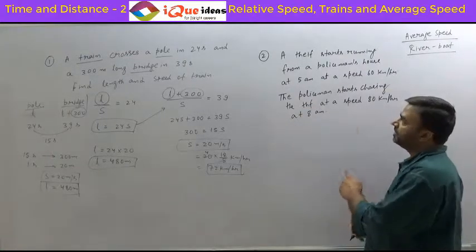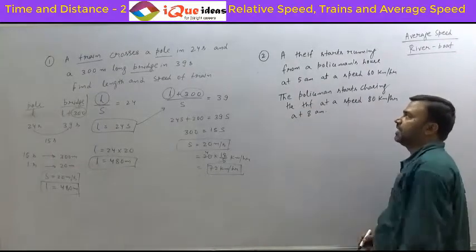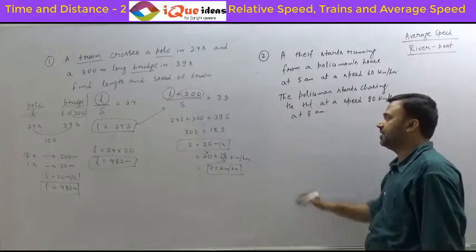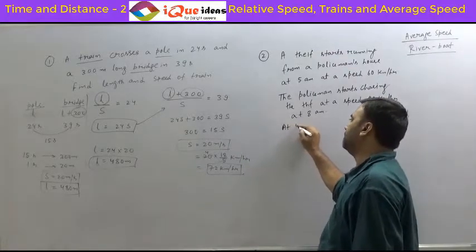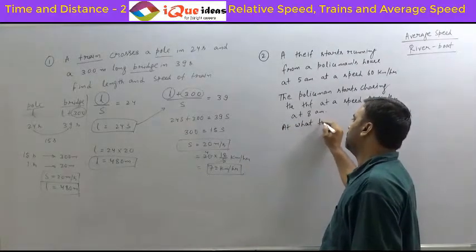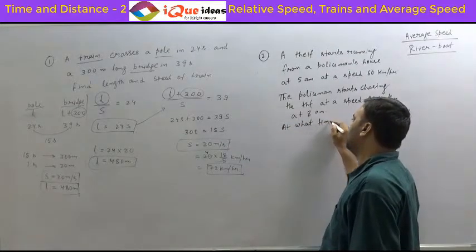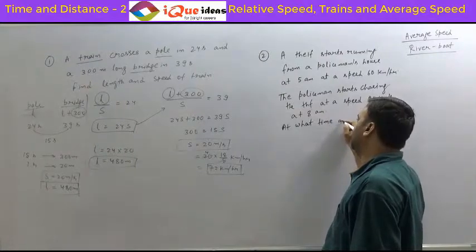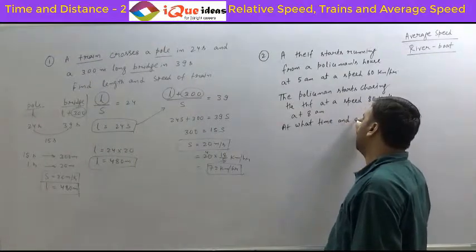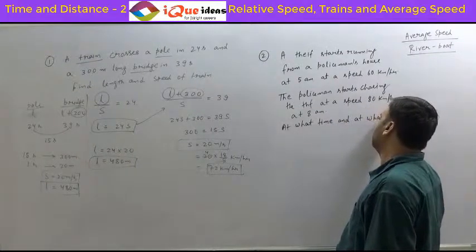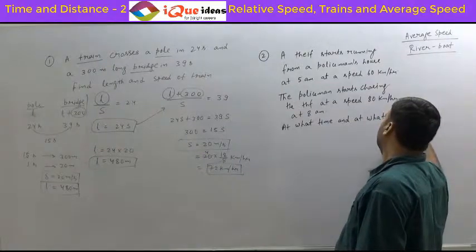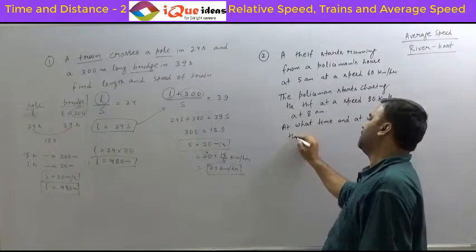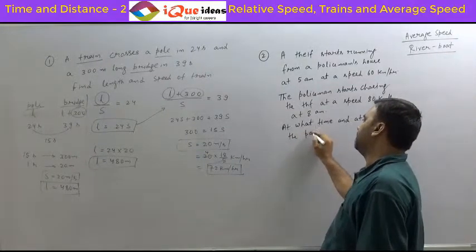The policeman starts at 8 a.m. The thief has already started at 5 a.m. The question is: at what time and at what distance does the policeman catch the thief?